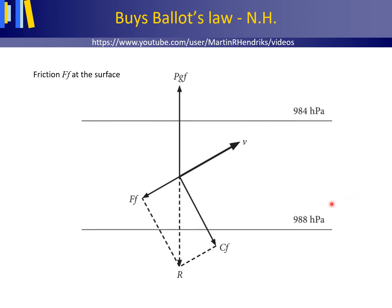We have high pressure here and lower pressure here, so this is the pressure gradient force — the air moves, the wind blows. Due to this, not only the Coriolis effect comes into action, but also resistance to the air movement: the friction force.